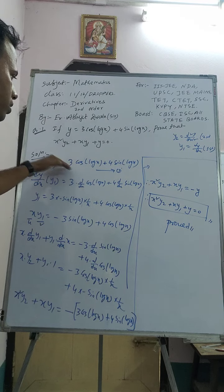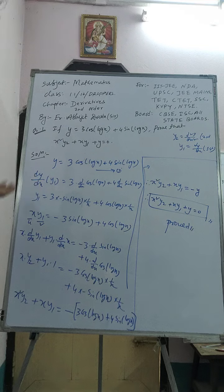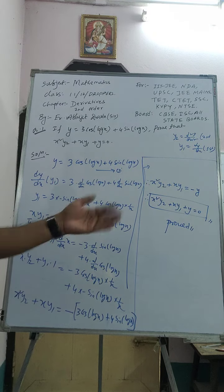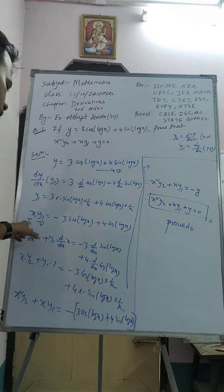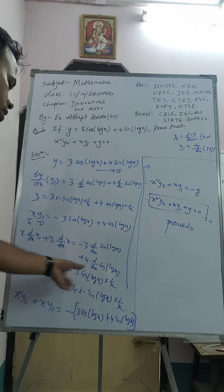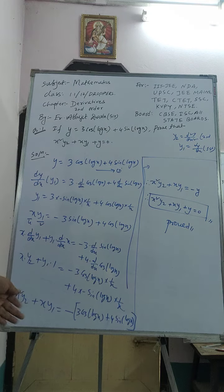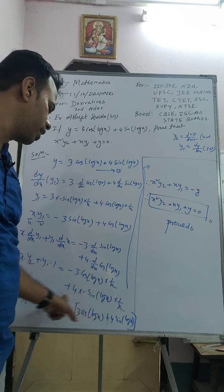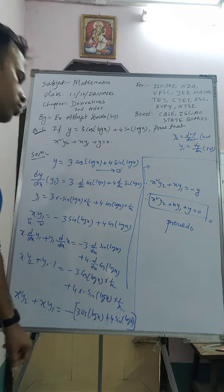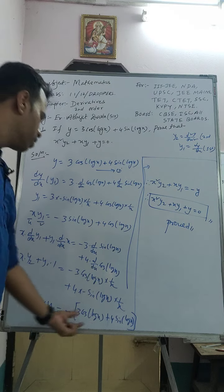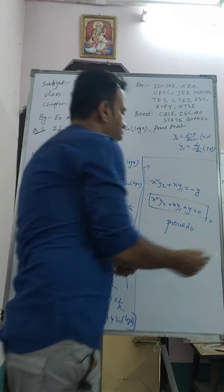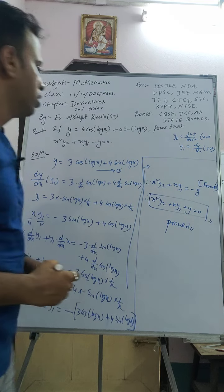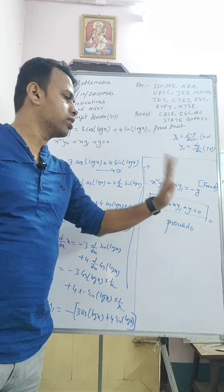To summarize what I did: I differentiated both sides with respect to x, then multiplied by x on both sides to get xy₁. Then I differentiated again, applied the product rule, multiplied by x once more to get x²y₂ + xy₁, and recognized the remaining terms as −y from equation 1. Taking −y to the left side gives x²y₂ + xy₁ + y = 0. Answer is proved.